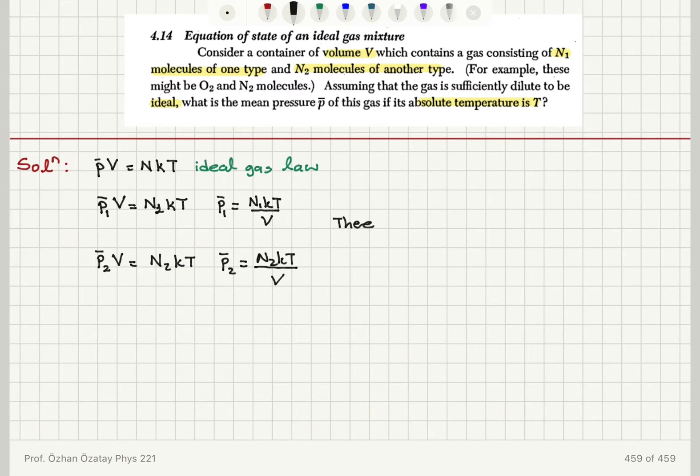Therefore, the mean total pressure exerted by these two types of gases will be P̄ = P̄₁ + P̄₂. So the mean pressure exerted by the gas will be P̄ = (N₁ + N₂)kT/V, the total number of molecules divided by V multiplied by kT.